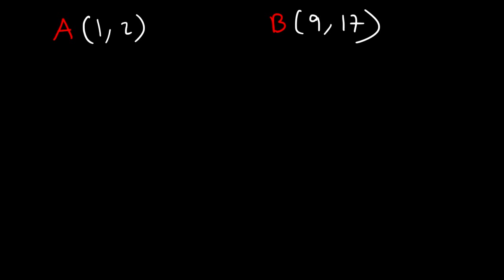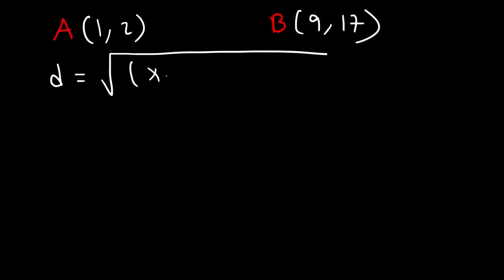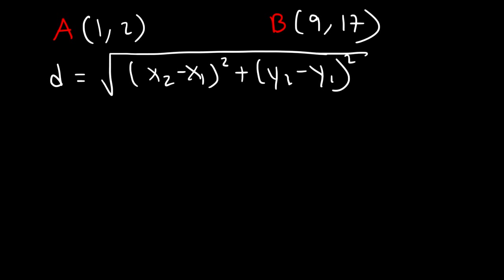Here's the formula you need: it's equal to the square root of (x2 minus x1) squared plus (y2 minus y1) squared. You need to know what x1 and x2 are. The x-values come from the first coordinate and the y-values from the second, so for point A: x1 is 1, y1 is 2, and for point B: x2 is 9, y2 is 17.